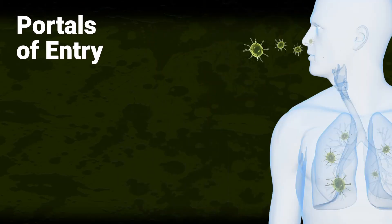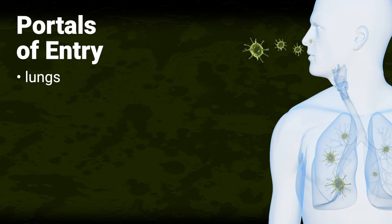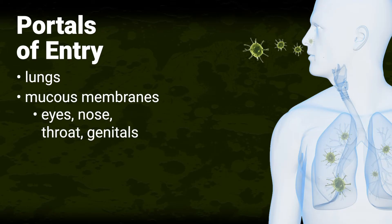Portals of entry. In order to cause disease, pathogens need to get into the body. There are three main ways, called portals of entry. Pathogens do this through the lungs by breathing, by way of the respiratory route, through contact with mucous membranes such as eyes, nose, throat, and genitals, and through the skin by absorption or contact with openings in the skin, like cuts or wounds.